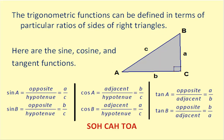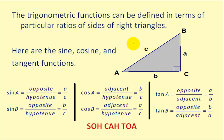These trig functions can be defined in terms of particular ratios of sides of right triangles. Here are the sine, cosine, and tangent functions in terms of ratios of sides of right triangles. Starting at angle A, sine would be the ratio of the opposite side over the hypotenuse. Remember that the hypotenuse is always opposite the right angle — if you were to bisect the right angle, the side that you run into would always be the hypotenuse.